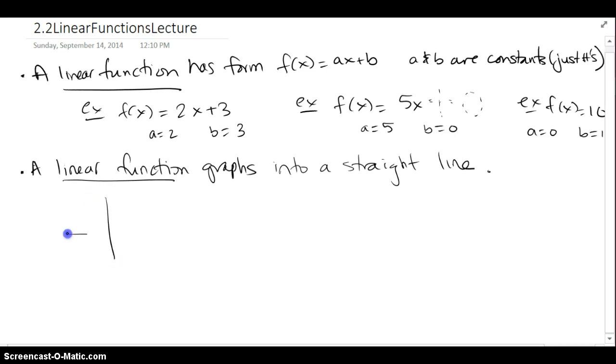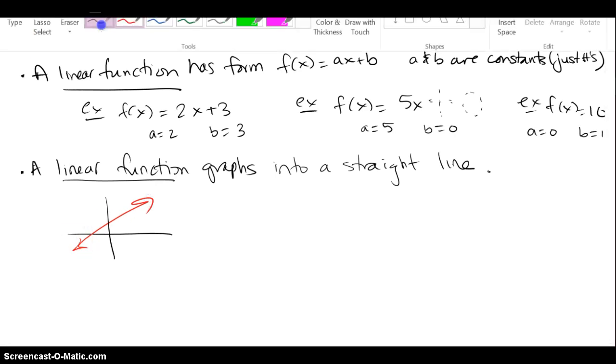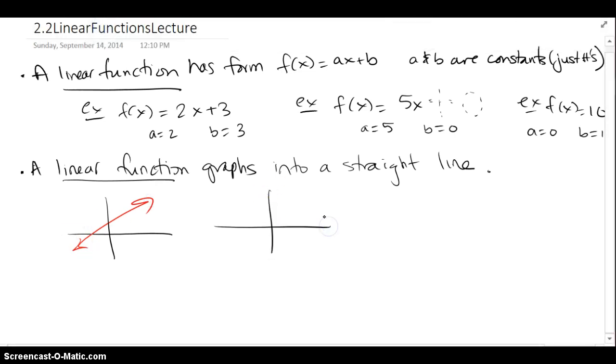A linear function's graph always graphs into a straight line. So for example, I could have the graph look like this, a straight line. Or I could have the graph look like this, a straight line. So as long as it's a linear function, it'll graph into one of those straight lines.